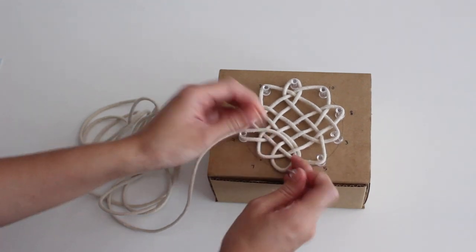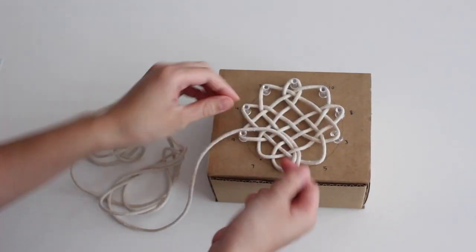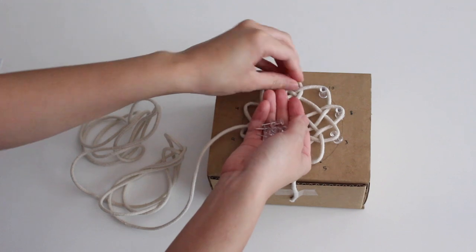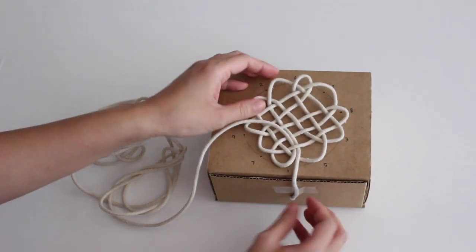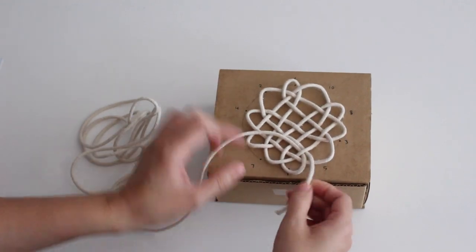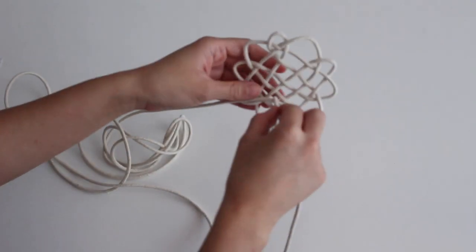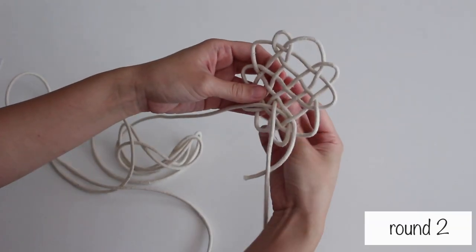Remove the knotted coaster from the box. Carefully weave the cord a little at a time.